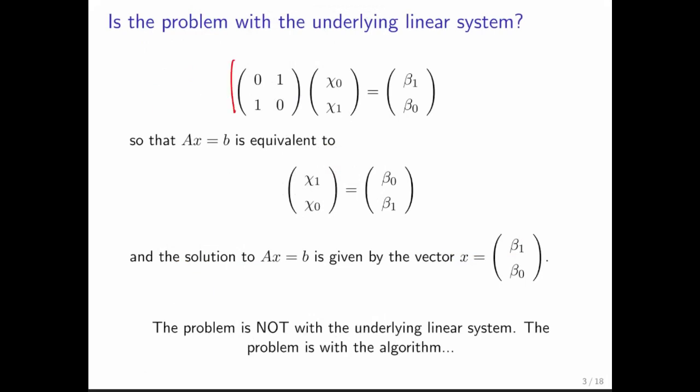If we place this matrix into a linear system, so now we are looking at Ax is equal to b, then what do we notice? Well, if you multiply this out, this gives you the vector chi 1, chi 0. And if you now transform that into a linear system, what we find is that chi 1 is equal to beta 0, and that chi 0 is equal to beta 1, and that's given right here.